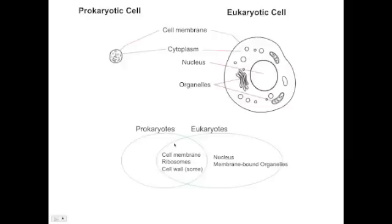These are specialized structures where certain functions will take place inside eukaryotic cells. This is basically divisions of labor within the eukaryotic cells. And part of the reason why eukaryotic cells are so much larger is because they contain these structures.